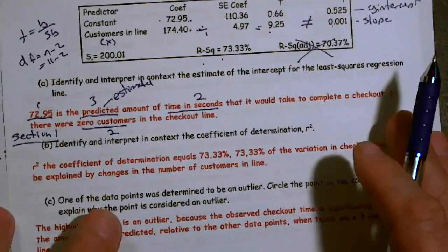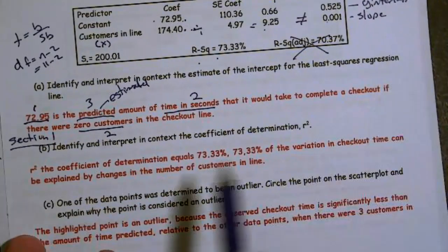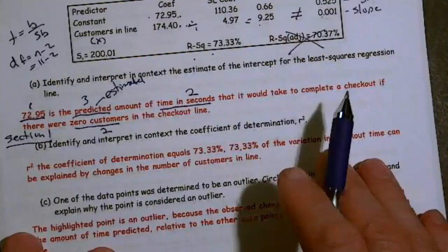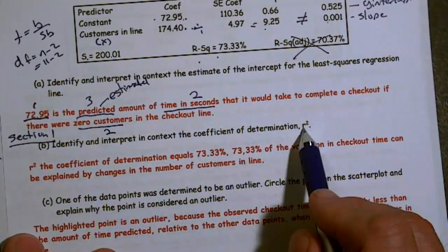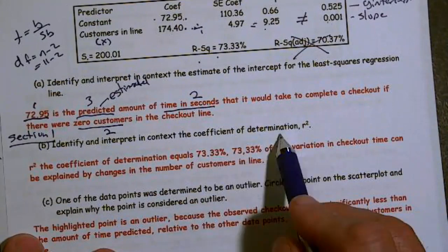So next thing says, identify and interpret in context the coefficient of determination, or the R squared. Well, I'm surprised they said R squared. I'm surprised they just didn't say coefficient of determination. Well, that's right here, 73.3.